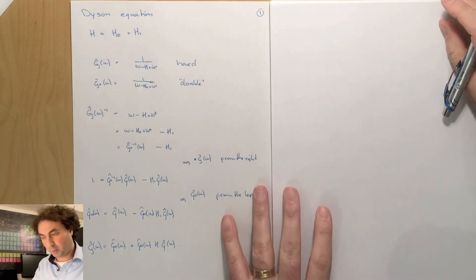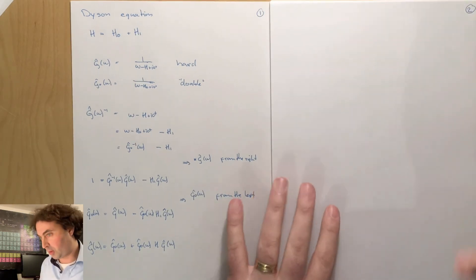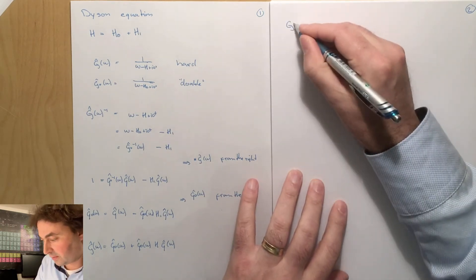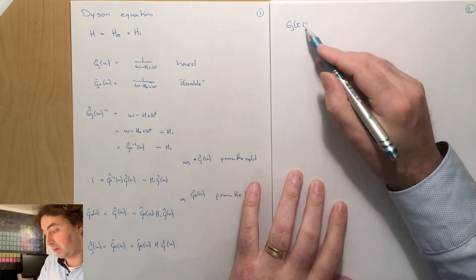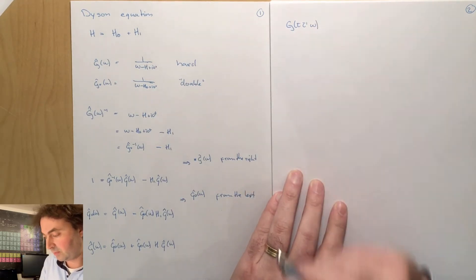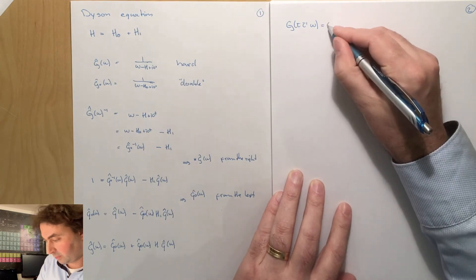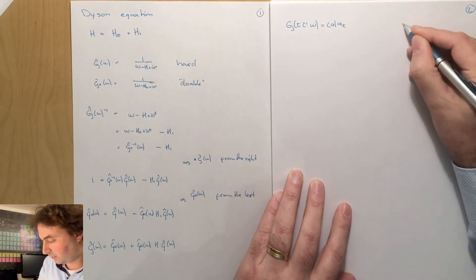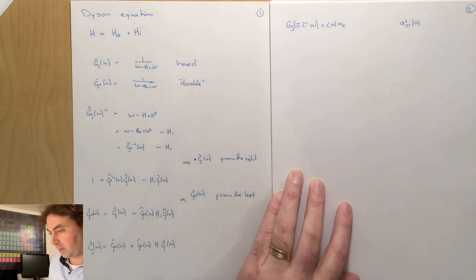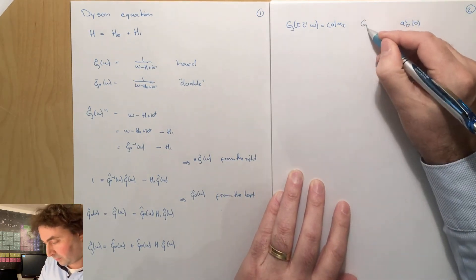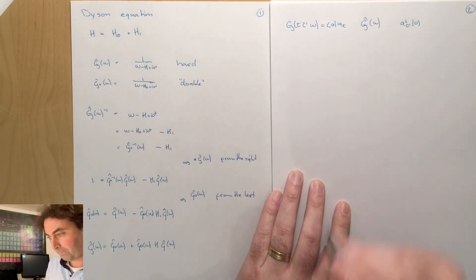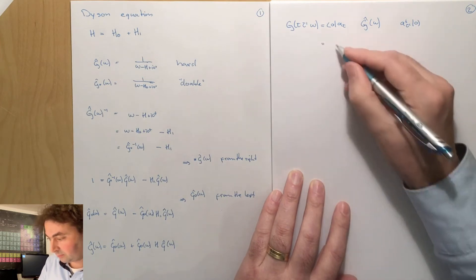Now we want to go from the operator level to the function level. What we're actually interested in is the Green's function, where we create a particle in quantum state tau prime and annihilate it in state tau. So we have our vacuum, we create a particle in tau prime, and then we look at the expectation value of our Green's operator.